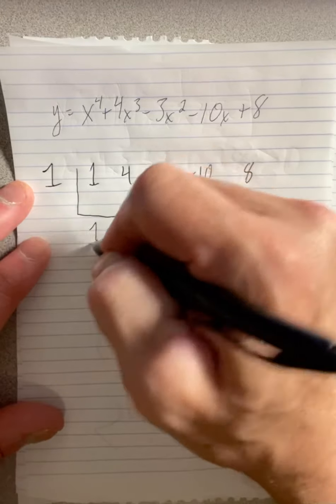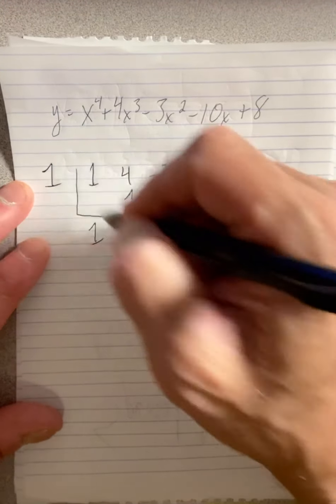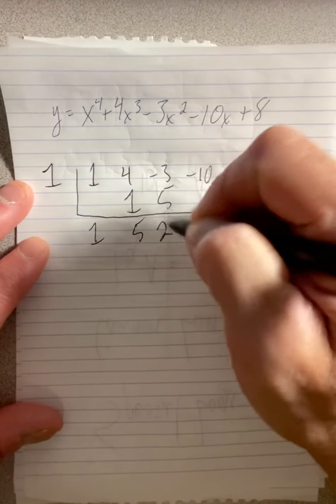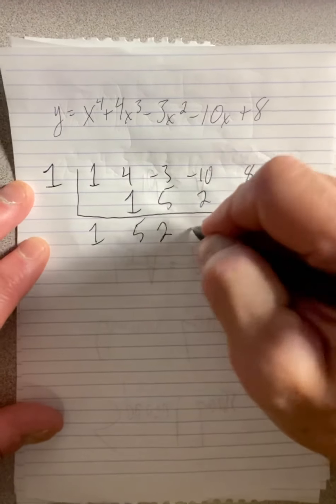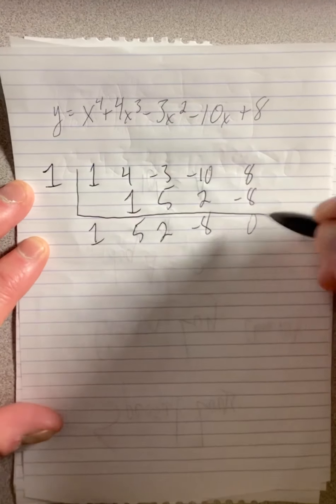So we'll use one. One times one is one. You add here, you get five. One times five is five. You add here, you get two. One times two is two. We add here, you get negative eight because of the negative ten. One times a negative eight is a negative eight. We get zero. Sure enough, it worked. So one is a root.